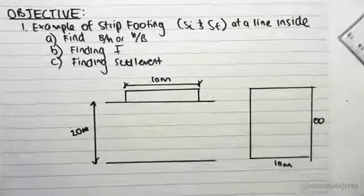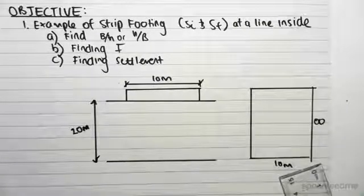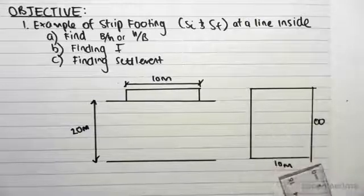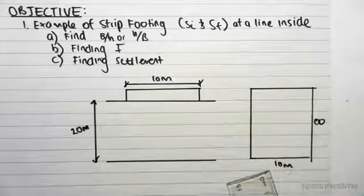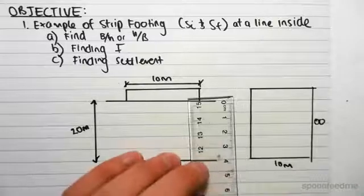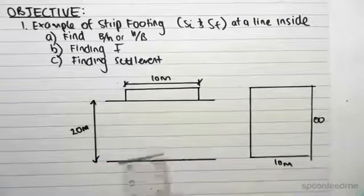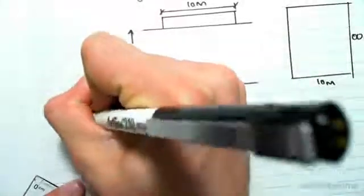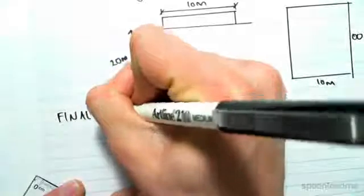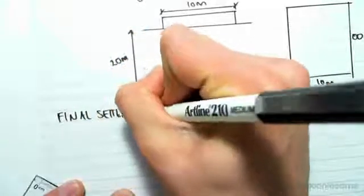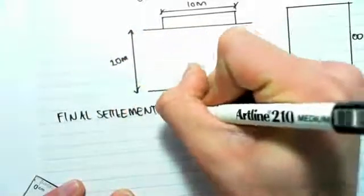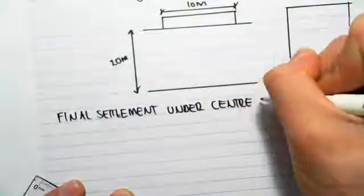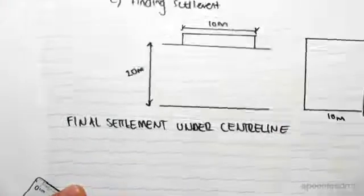For a strip footing, like we did with a rectangle in a couple series ago, we had to split the rectangle up into corners. The strip footing is sort of similar. We have to split it up into, not corners anymore, but edges.